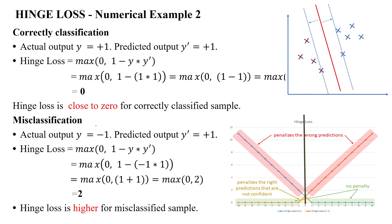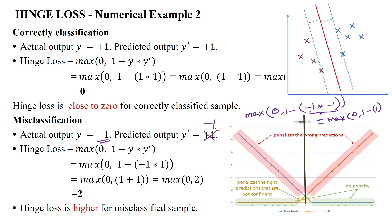Finally, for a correctly classified negative sample, the actual output is minus 1 and the predicted output is also minus 1. Substituting into the hinge loss: maximum of 0 and 1 minus (minus 1 times minus 1) = maximum of 0 and 1 minus 1 = maximum of 0 and 0 = 0. The loss is 0, meaning the negative sample is correctly classified as negative. Whenever data is perfectly classified, the hinge loss is close to zero; if misclassified, it will be a higher value.